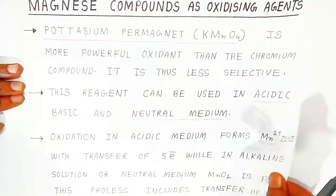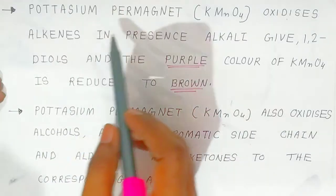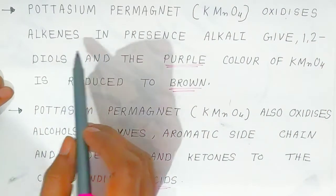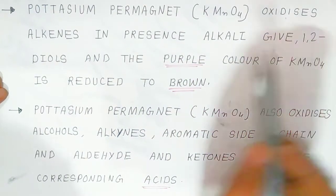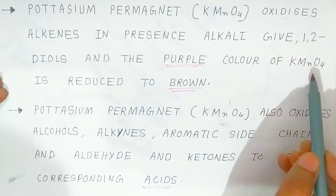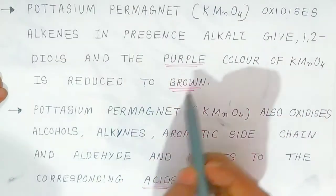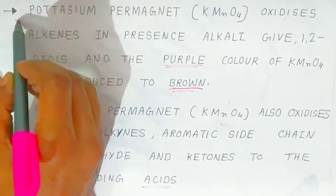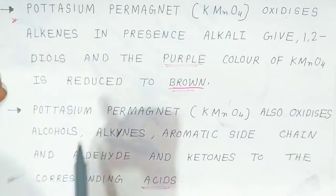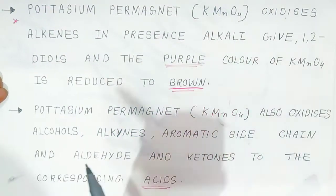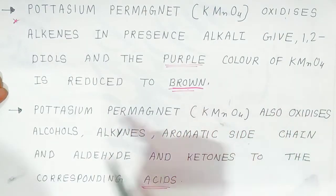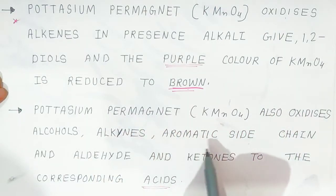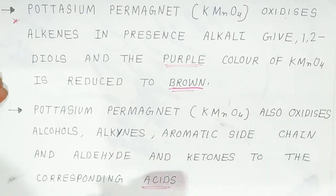Potassium permanganate oxidizes alkenes in presence of alkali to give 1,2-diols, and the purple color of KMnO4 is reduced to brown. This is a very important reaction, as the double bond is reduced to a single bond. KMnO4 also oxidizes alcohols, alkynes, aromatic side chains, and aldehydes and ketones to the corresponding acids.